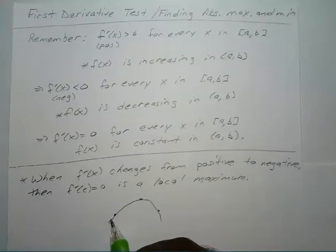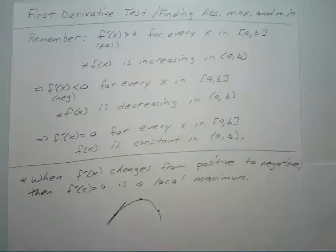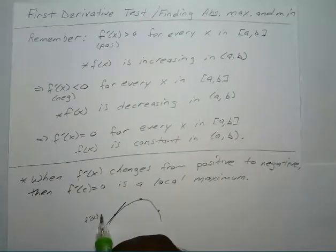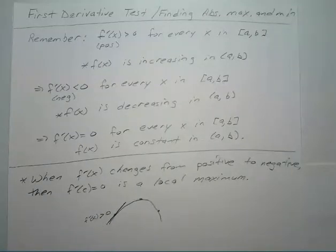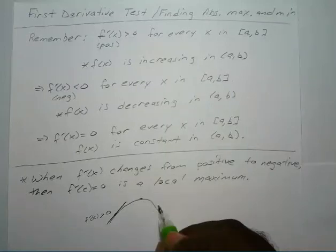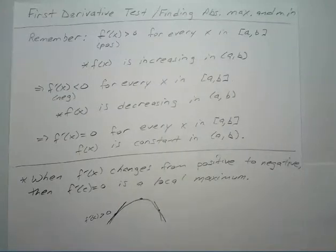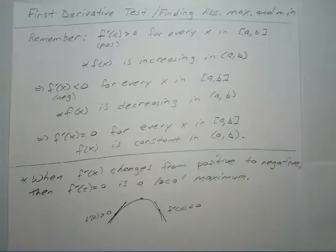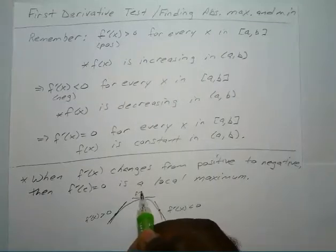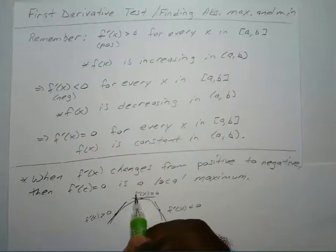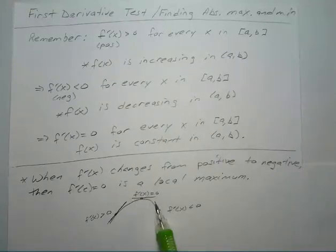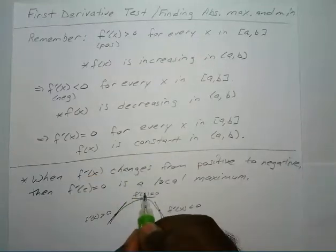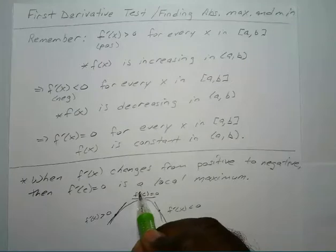You can see that the point on the left has a positive slope, so f prime of x is greater than zero. For the point on the right, the slope is negative, so f prime of x is less than zero. Right at the peak, f prime of x equals zero. So you're going from positive to negative, which means f prime of c is your local maximum.